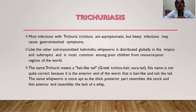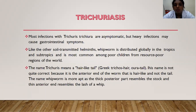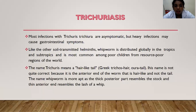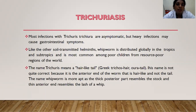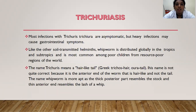The fourth important nematode is Trichuriasis. Most infections with Trichuris trichiura are asymptomatic, but heavy infections may cause gastrointestinal symptoms. It is commonly known as the whipworm, distributed in the tropics and subtropics, most common among poor children from resource-poor regions. The name trichuris means hair-like tail — Greek trichos means hair, oura means tail. This name is not quite correct because it is the anterior end of the worm that is hair-like. The name whipworm is more apt as the thick posterior part resembles the stalk and the thin anterior end resembles the lash of a whip.